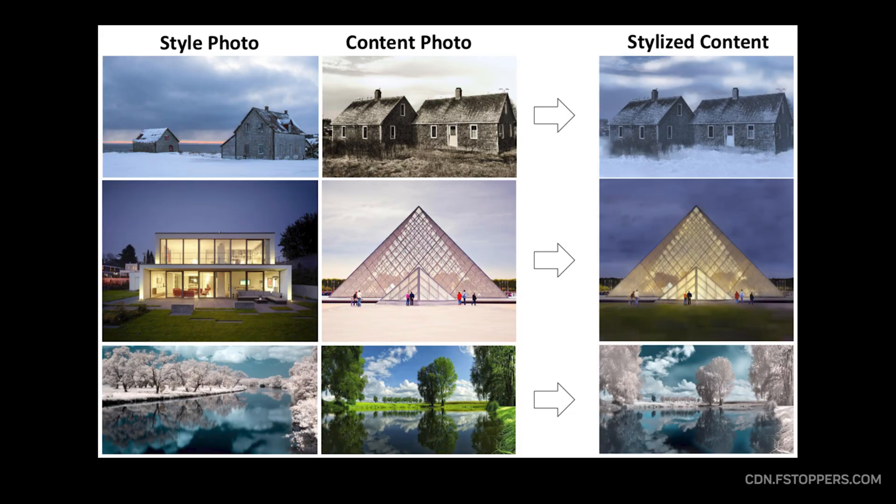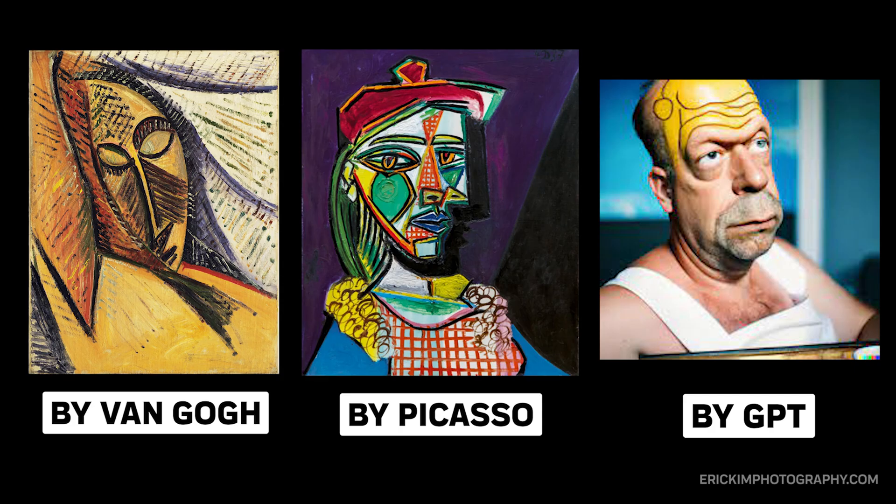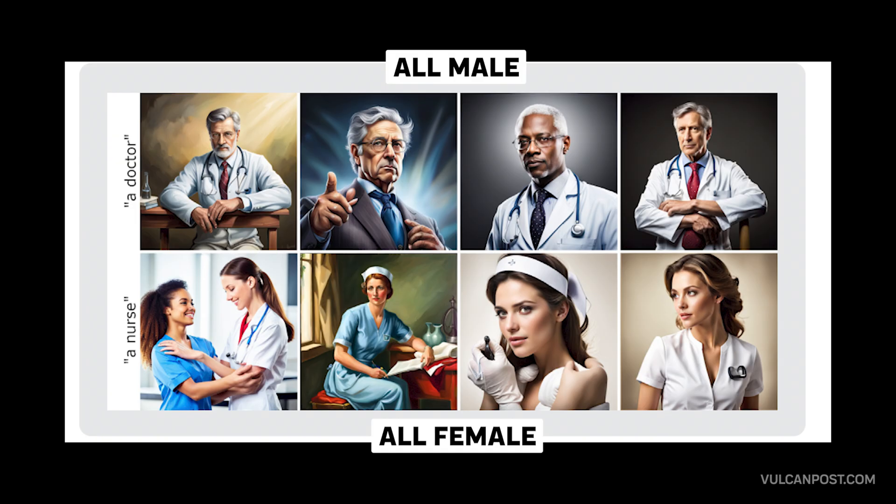Despite their power, these models have limitations. They can only remix and recombine patterns they've seen in their training data. They're not truly creative like humans. They can also reproduce biases and generate misleading content, raising important ethical questions.